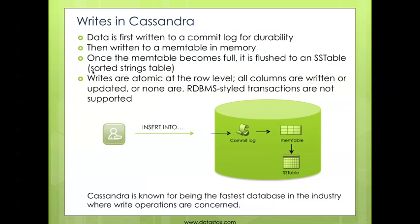Now let's talk in more detail about how Cassandra writes data. There's some internet talk that says NoSQL databases really aren't safe for your data — in other words, you can lose data. Where Cassandra's concerned, that's absolutely false. When you write data into Cassandra, it first writes it to a commit log for durability, and this means your data is absolutely safe.